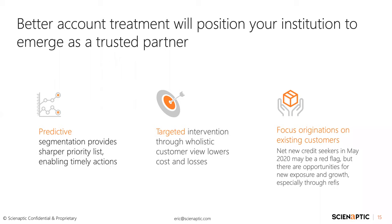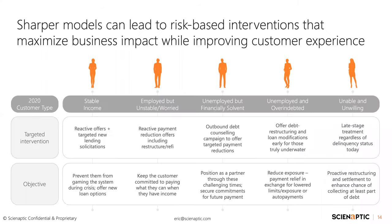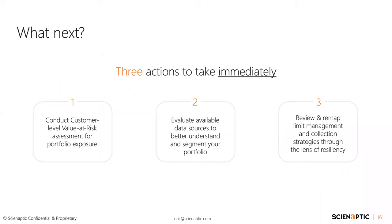Looking at your existing customer base, combining that with the information you have and trying to consolidate their debt — ideally through refinance or balance transfer options — is absolutely a safe growth path, especially for customers you have a lot of data on. In terms of actions to take immediately: these are things that can be accomplished over the coming weeks, not meant to define your strategy over the next 3, 6, or 12 months. If you have not already done this, now is the time to take action. First and foremost: conduct a customer-level value-at-risk assessment for your portfolio exposure. Understand not just your exposure by loan type, but your exposure by household type, prioritizing customers you may have multiple relationships with.